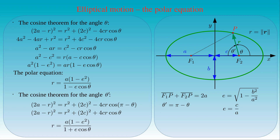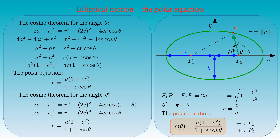The general form of the polar equation states that the distance R of the position P of the moving body from any of the foci is a function of the angle theta, and is given by A times 1 minus E squared, divided by 1 minus or plus E times cosine theta. If the distance is measured from the fixed point F1, we use the minus sign; if it is measured from the fixed point F2, we use the plus sign.